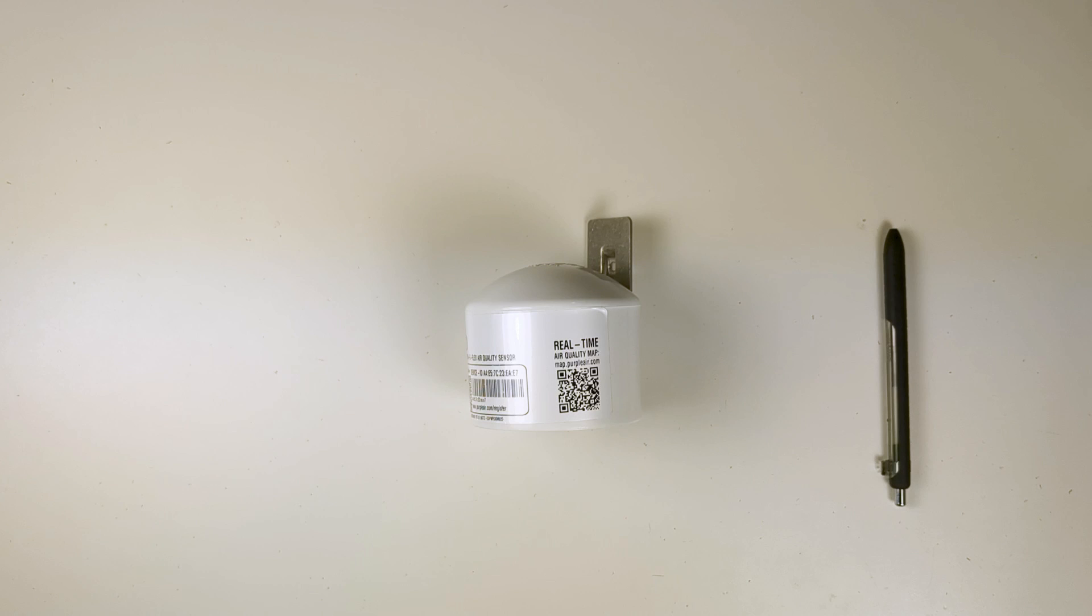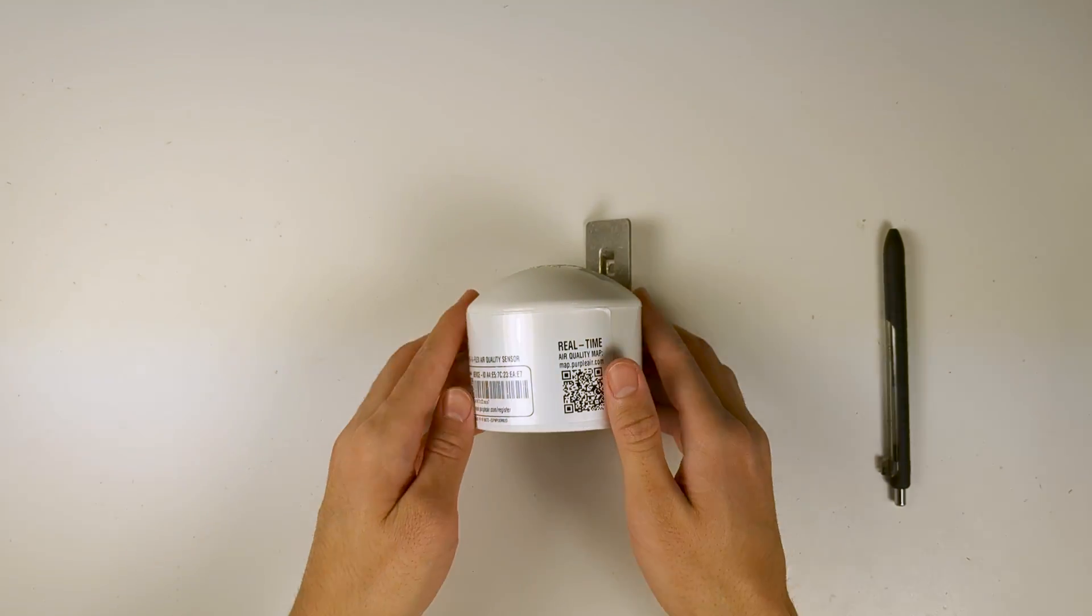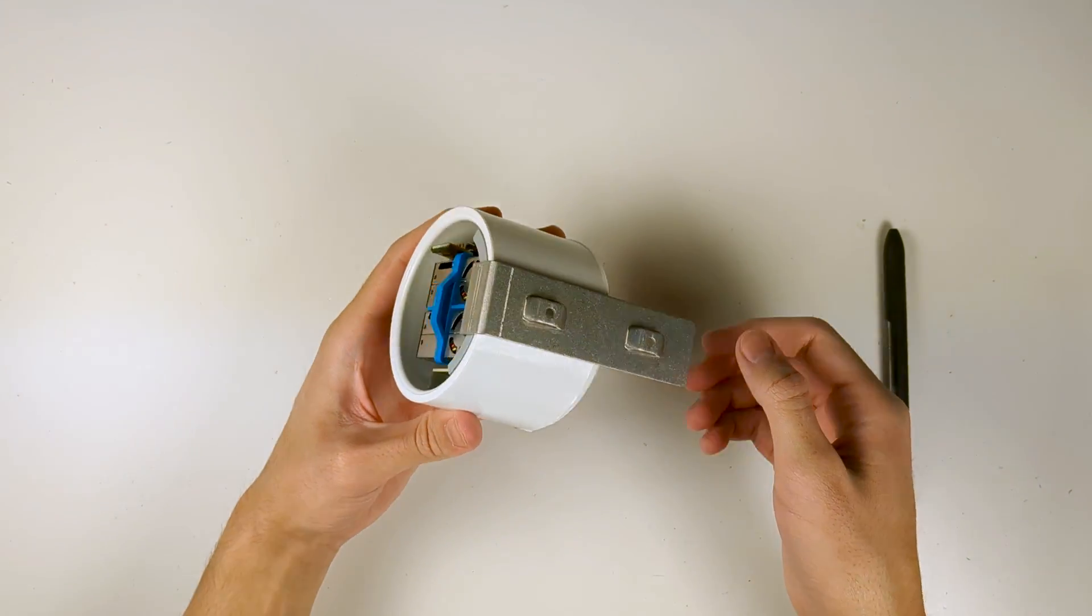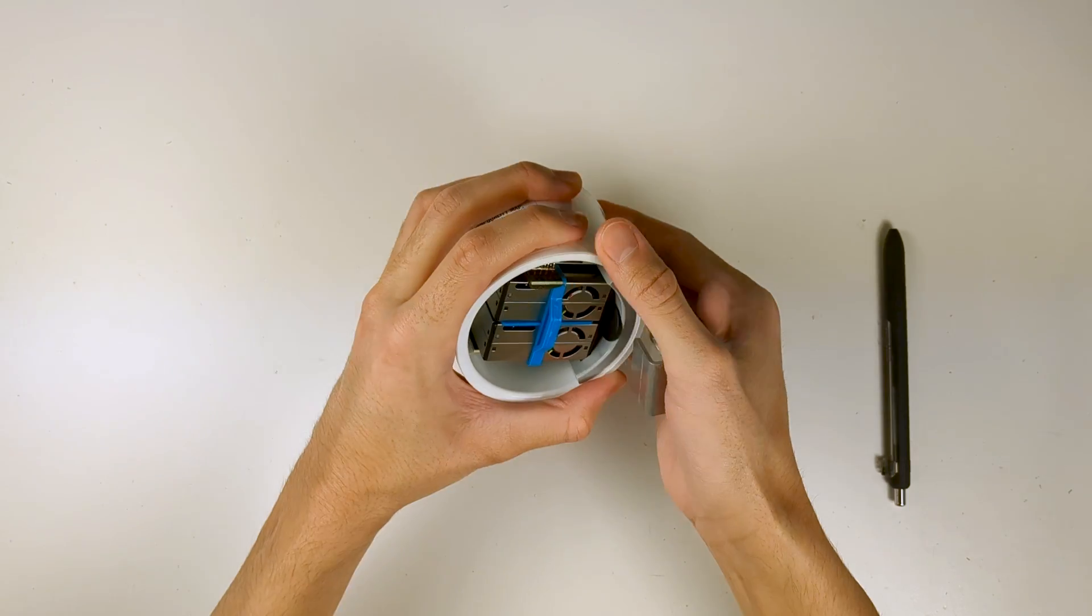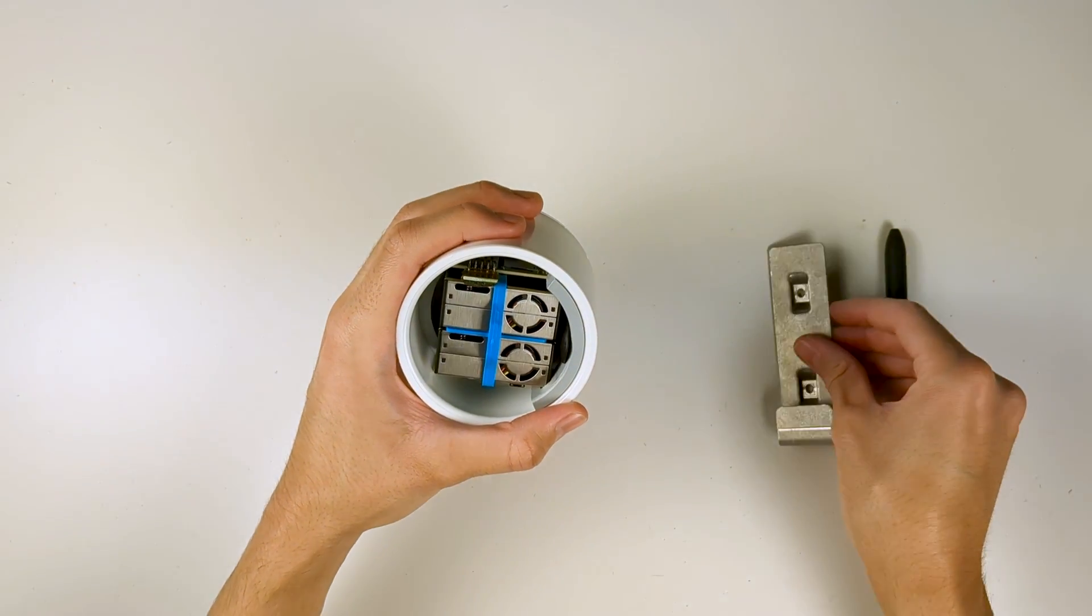This video will cover how to replace the laser counters in your PA2 Flex sensor. First, remove the bracket from the device. This can be done by firmly holding onto both the bracket and the housing and pulling them away from each other.